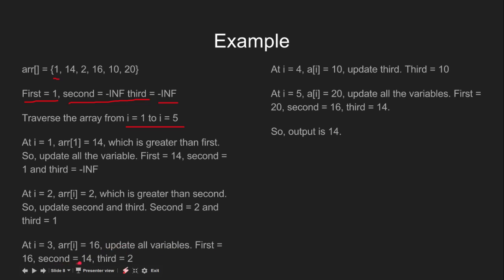First becomes 16, second becomes 14, and third becomes 2. At i equal to 4, we have 10, which is greater than 'third', so we update 'third' to 10. At i equal to 5, we have 20, which is greater than 'first', so we update all the variables. First becomes 20, second becomes 16, and third becomes 14. Now we have iterated through the entire array and our output will be 14.